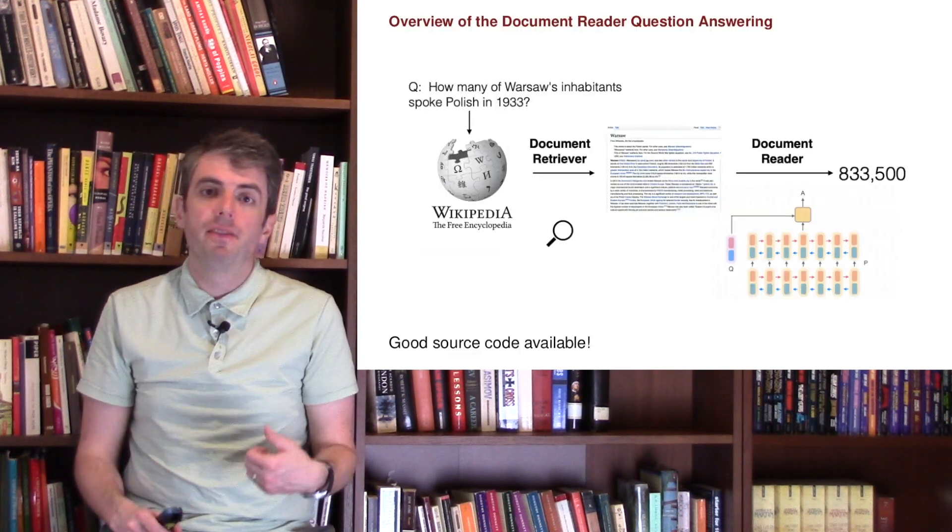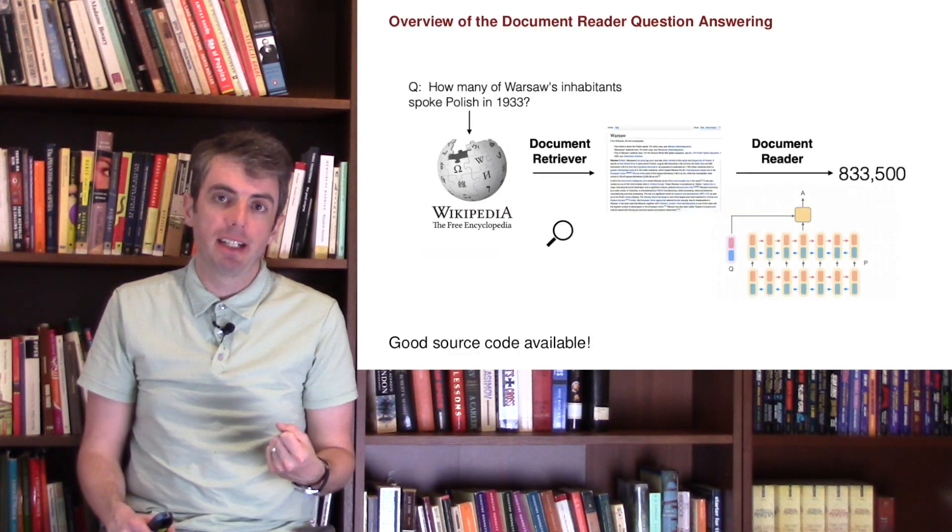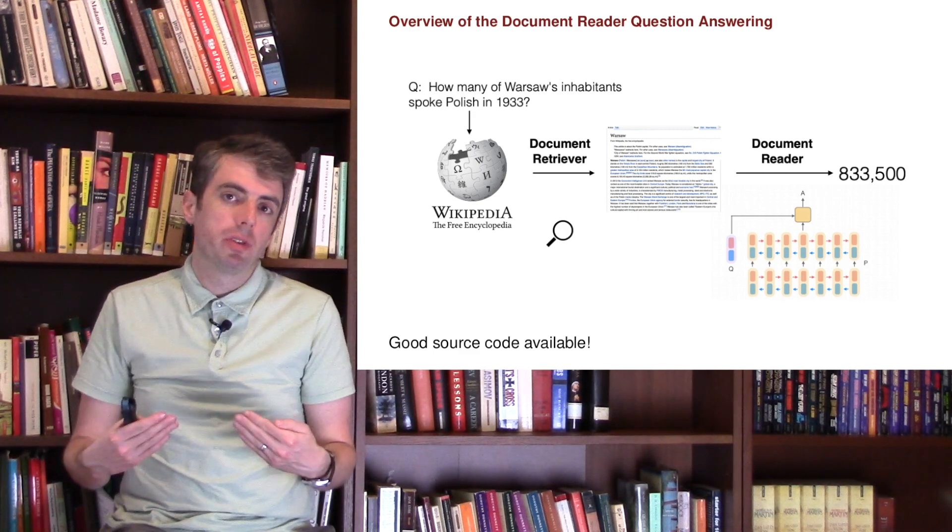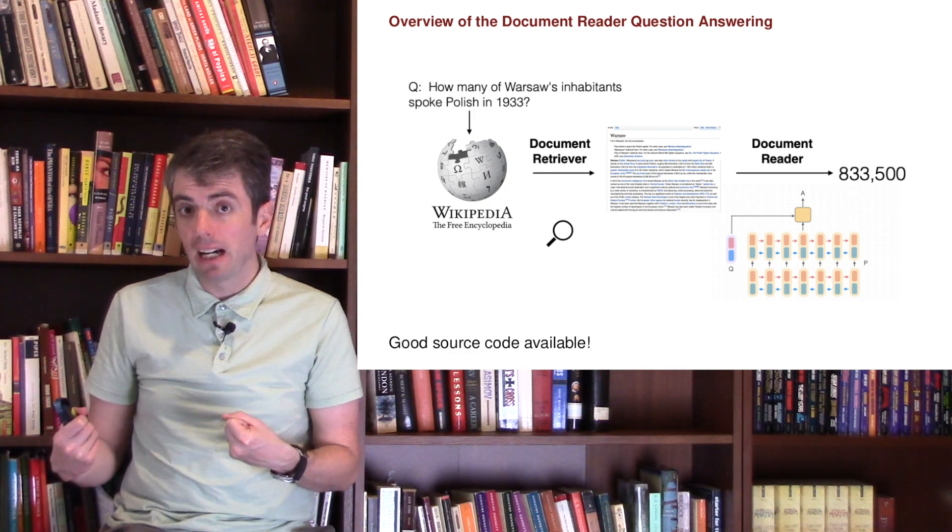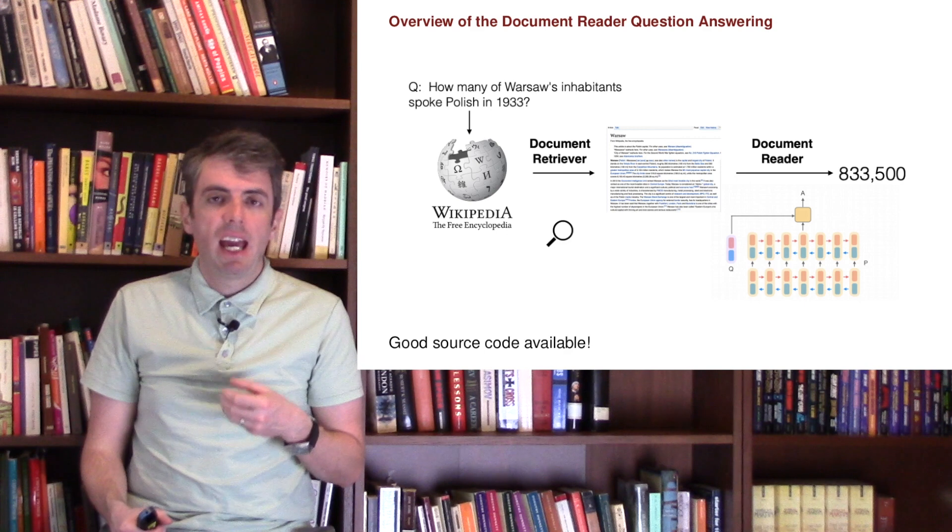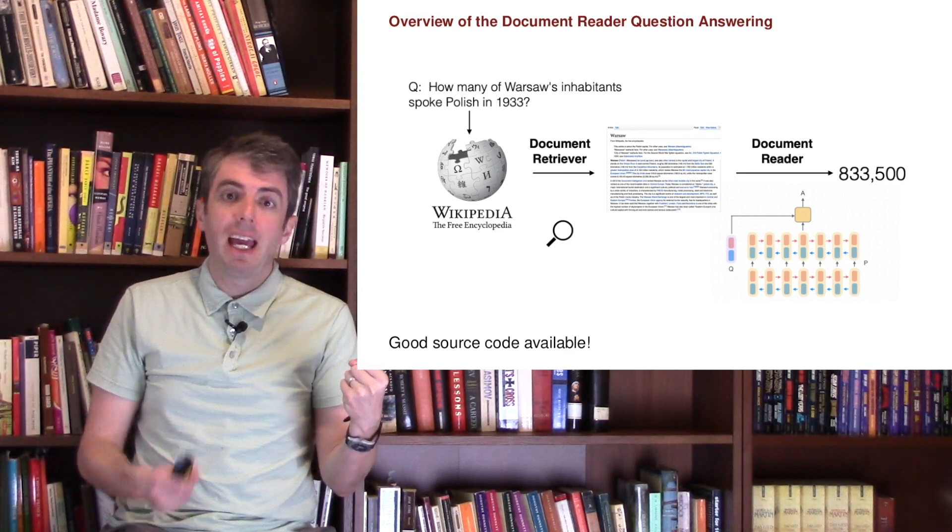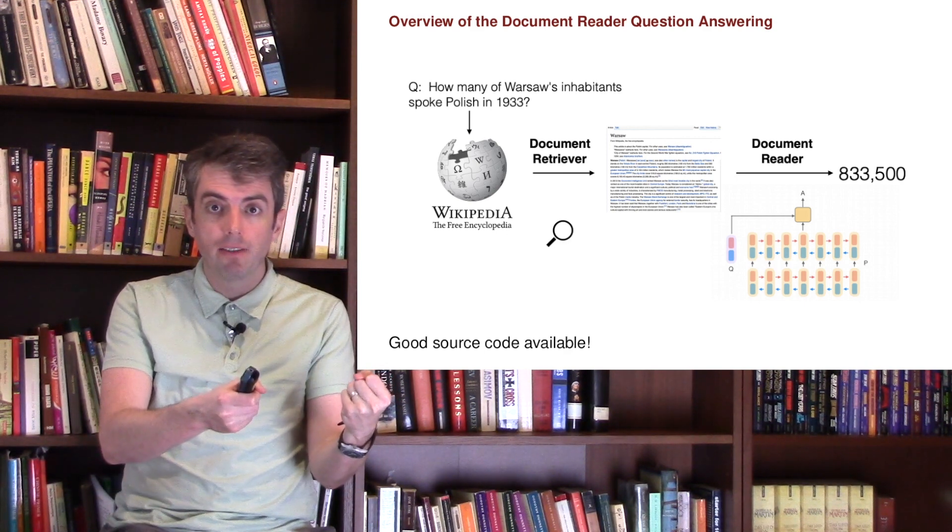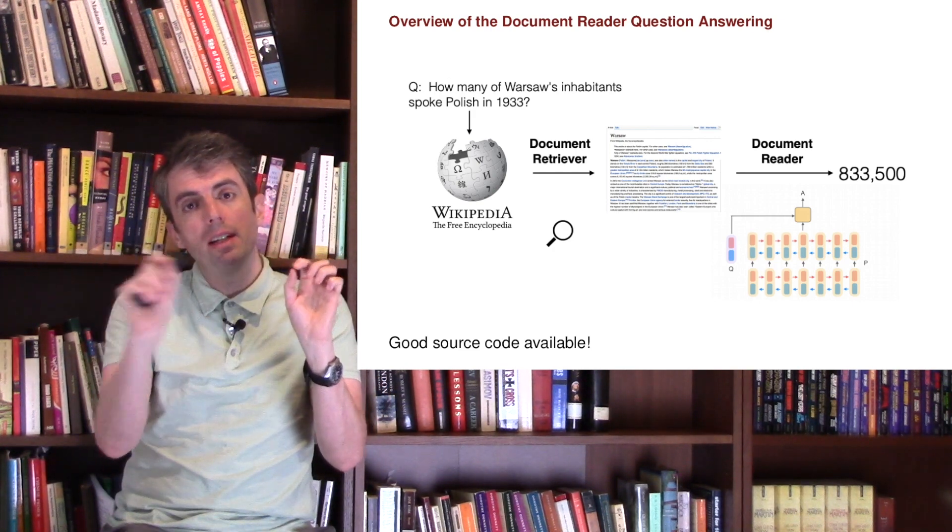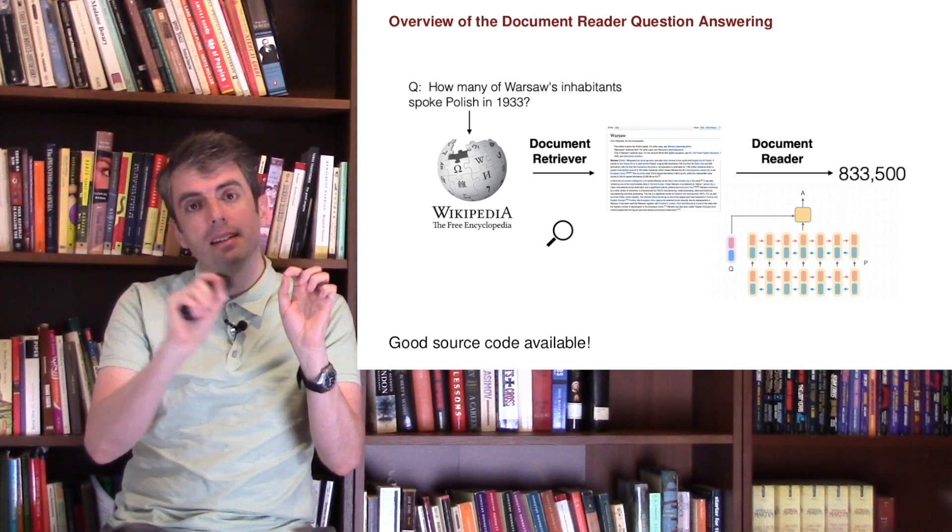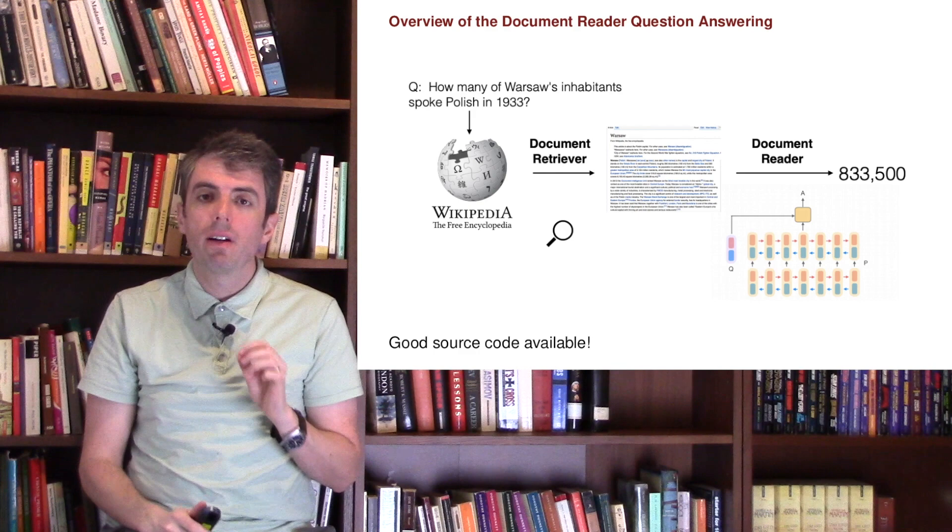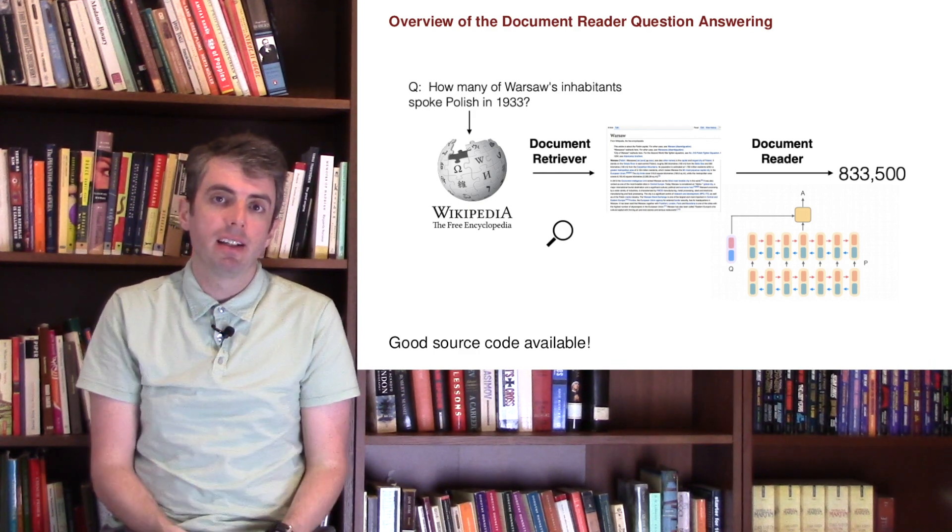This is an example of the machine reading paradigm where a question comes in. Given that question, you use an information retrieval system to find relevant documents that could have the answer. Then, given the question and the material you've collected from the information retrieval system, the system reads over every word in the passage and tries to highlight where that answer might be in the collection.